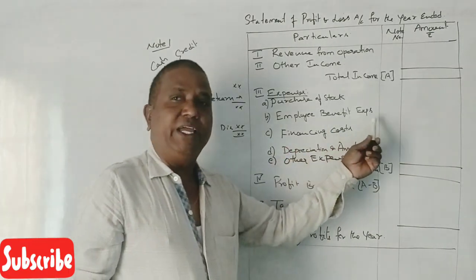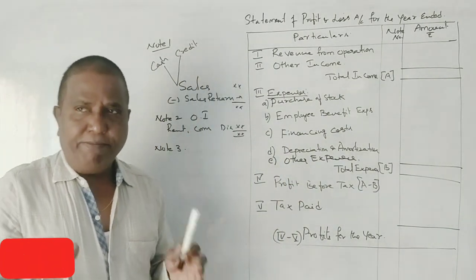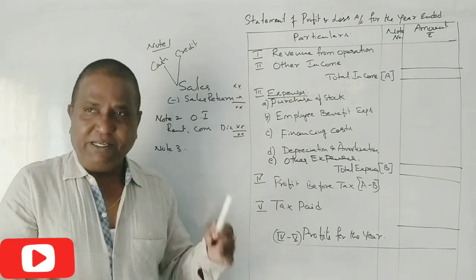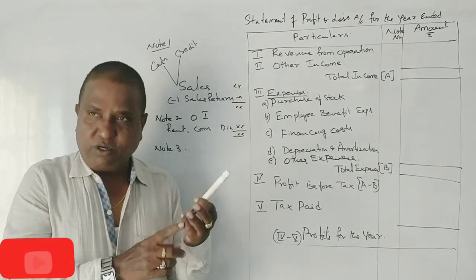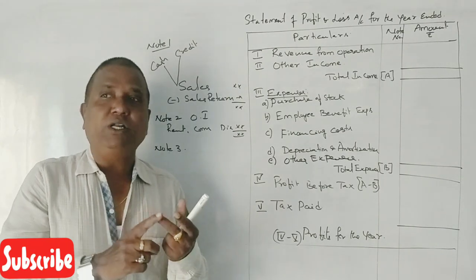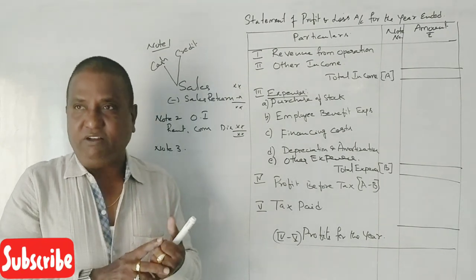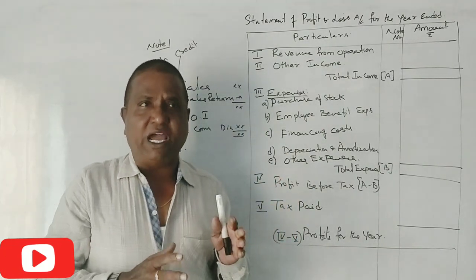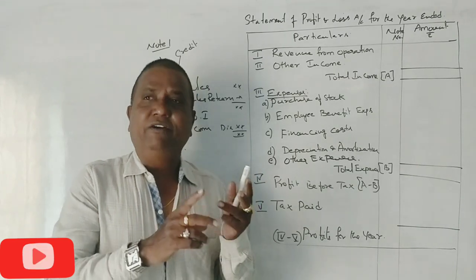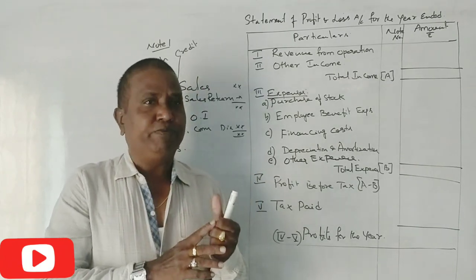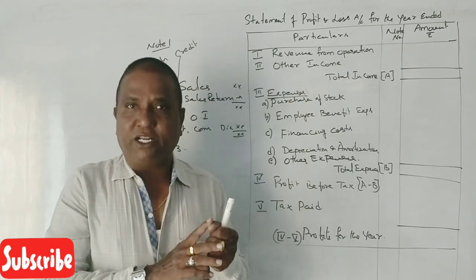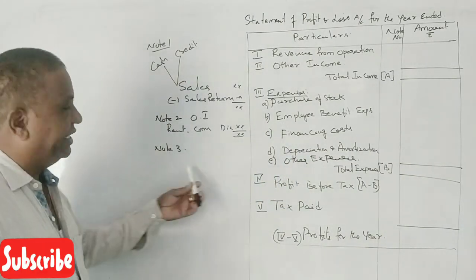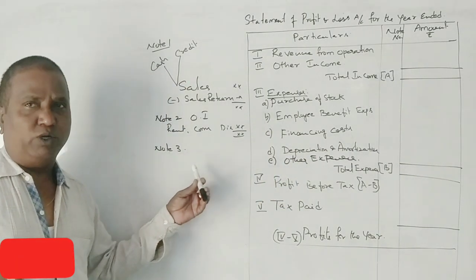Next: Employee Benefit Expenses. Under one joint stock company, employee expenses include Salaries, Wages, Bonus, Commission. All of these, along with Provident Fund contributions, are grouped under Employee Benefit Expenses. Whether there are two items or even one item, all such employee expenses fall under this head.